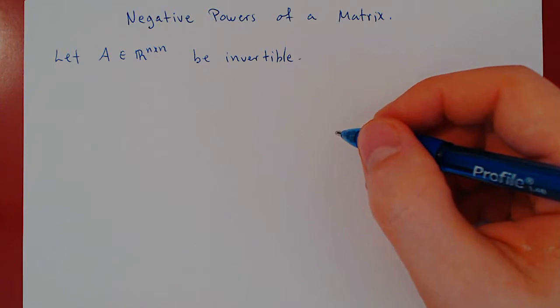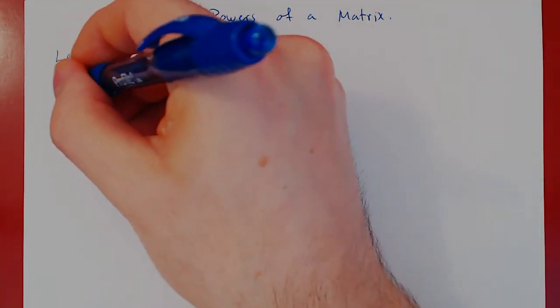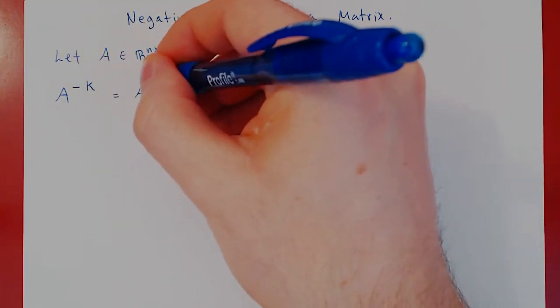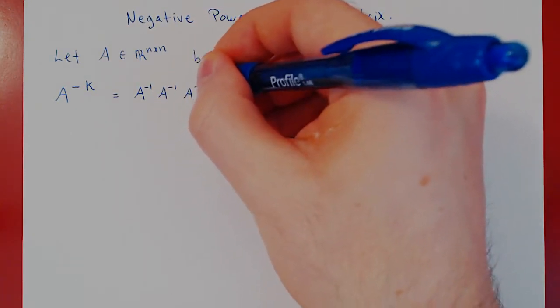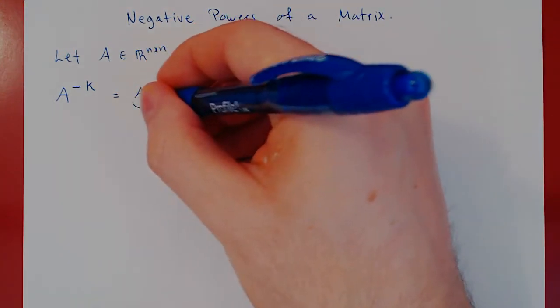So, A inverse exists. We can now make sense of, if you think of it, A to the negative k for any positive integer k, as being, quite simply, A inverse times A inverse times A inverse times A inverse, exactly k times.